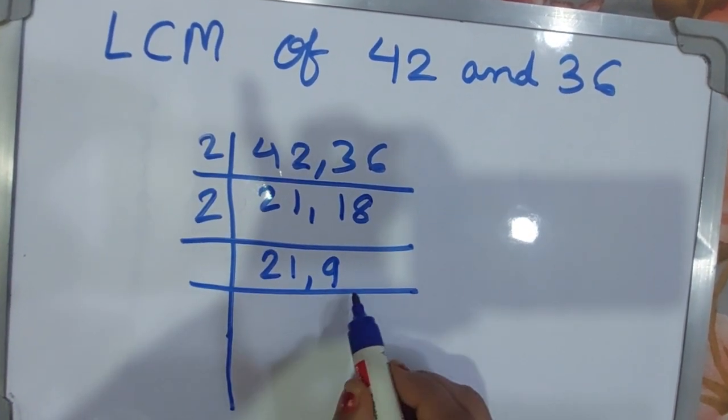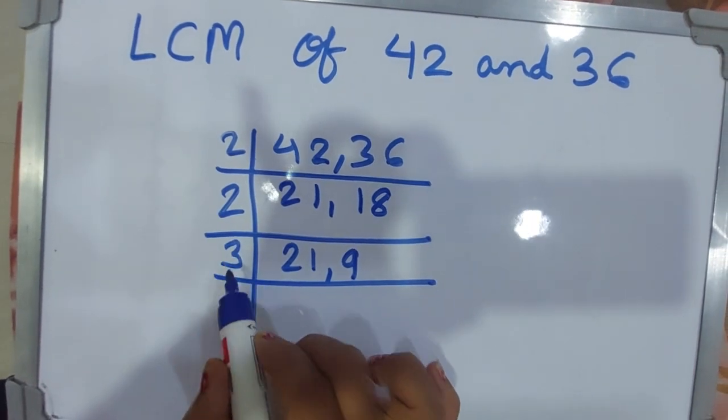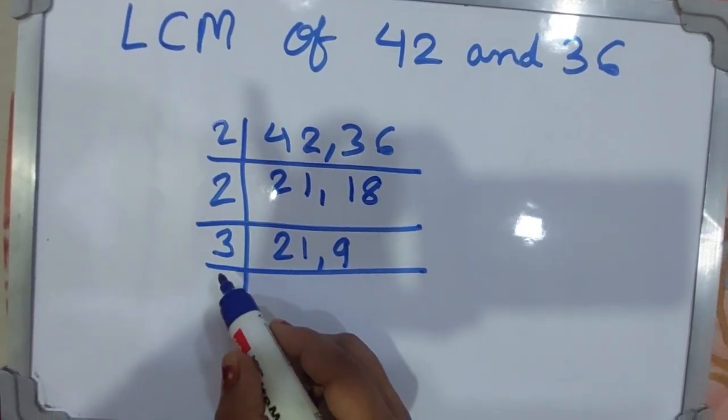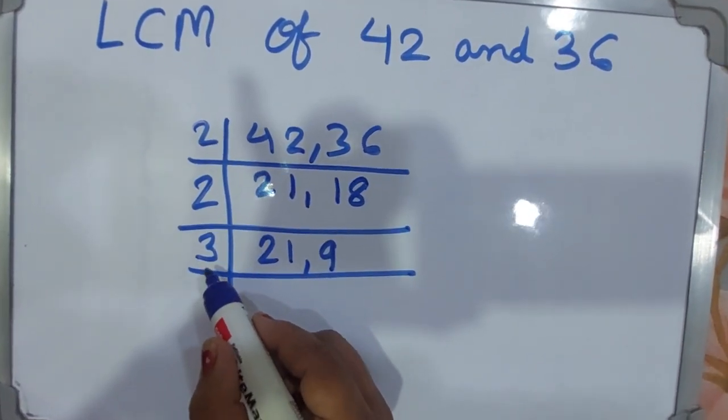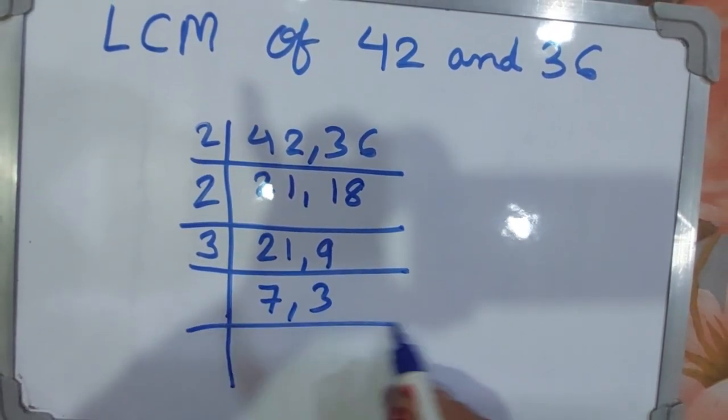Now, can both numbers be divided by 2? No. Now take another prime number, which is 3. 3 sevens are 21, 3 threes are 9.